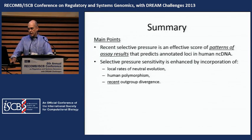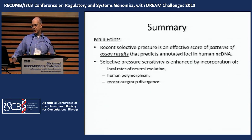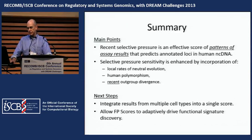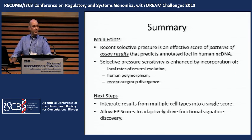In summary, recent selective pressure is an effective score of patterns of assay results that predict annotated loci in human non-coding DNA. Selective pressure sensitivity is enhanced by incorporation of local rates of mutation, human polymorphism, and recent outgroup divergence. Our next steps are to integrate results from multiple cell types into a single score, and allow the functional potential score itself to adaptively drive functional signature discovery.